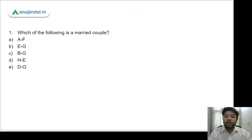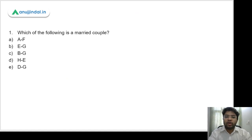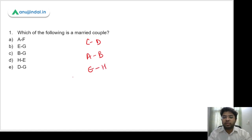Question 1: Which of the following is a married couple? Going back to the family tree, the three married couples are C&D, A&B, and E&H. Looking at the options, option D says H&E, which is indeed a married couple. So option D is the answer.